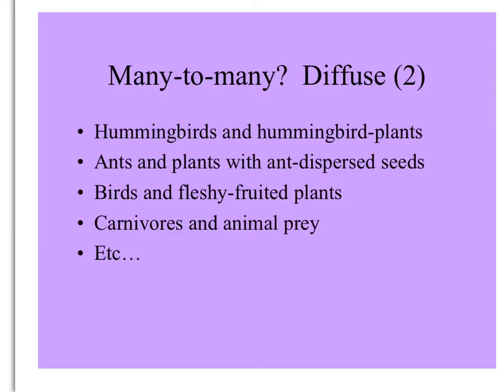For many-to-many co-evolution, we might see hummingbirds in an area and hummingbird-pollinated plants. Ants and plants with ant-dispersed seeds — different species of ants that take those seeds and the plants that produce them. Birds that eat fleshy-fruited plants, or carnivores and their animal prey. This can be quite diffuse and loose, making it hard to imagine how co-evolution might take place.